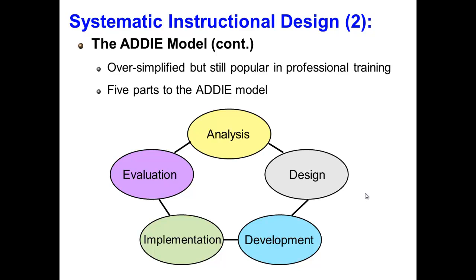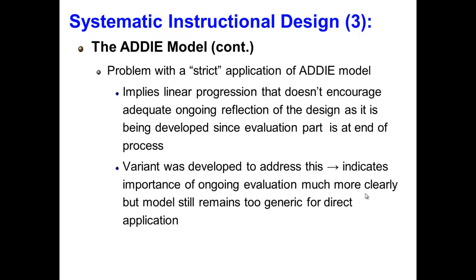Development refers to the establishing of a requisite system or systems and acquiring needed resources to obtain desired outcomes. Implementation refers to the process of implementing design and development plans within the real-world environment. Evaluation refers to the process of measuring the effectiveness and efficiency of the implemented system and using the collected data as an opportunity for improvement in closing the gaps between the actual and the desired outcomes. Despite the popularity of the ADDIE model, there are problems associated with it when we take a strict application of it. More specifically, it implies a linear progression that doesn't encourage adequate and ongoing reflection of the design as it is being developed.